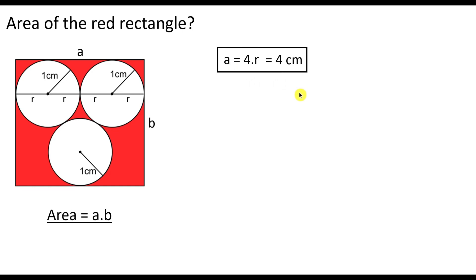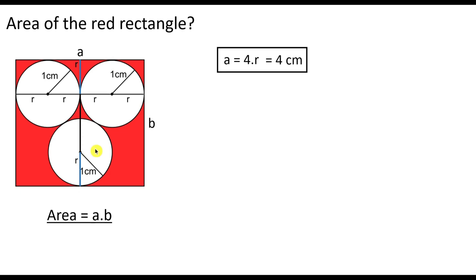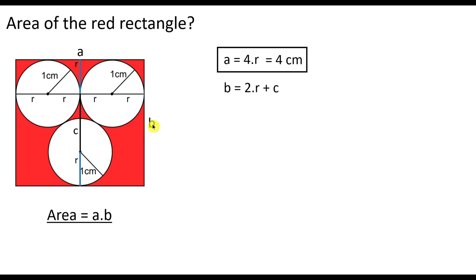Now we need to find B. Let's translate it to the center of the rectangle to see that these two pieces are each equal to the radius. So let's name this distance C. From the figure, we can see that B is in fact equal to two times the radius plus C.